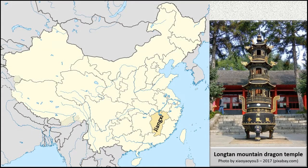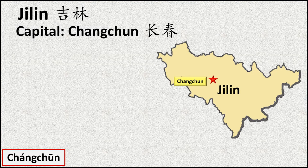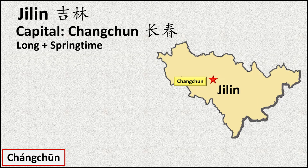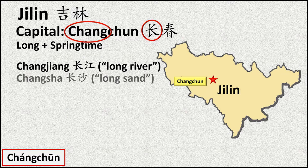Jumping north, we come to the remaining two northeastern provinces in the area often known in the west as Manchuria. The first of these is Jilin, whose name is the transliteration of a Manchu phrase meaning along the river. Its capital is Changchun, which consists of the word for long and the word for springtime. We previously encountered chang, the word meaning long — we saw it in Changjiang, the Chinese name for the Yangtze, and in Changsha, capital of Hunan province.